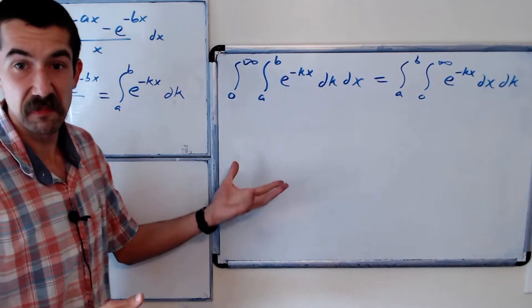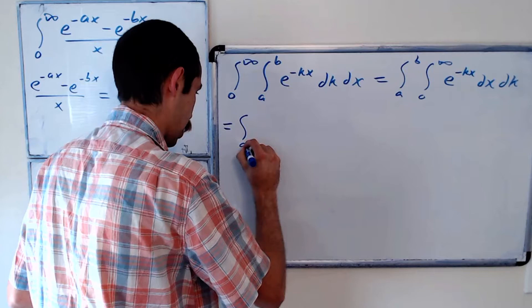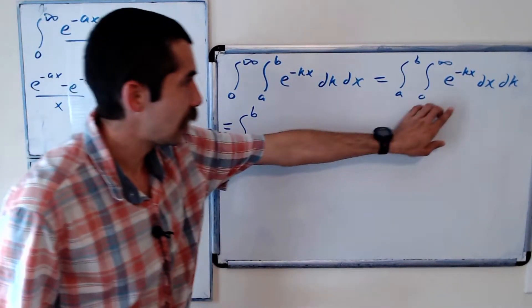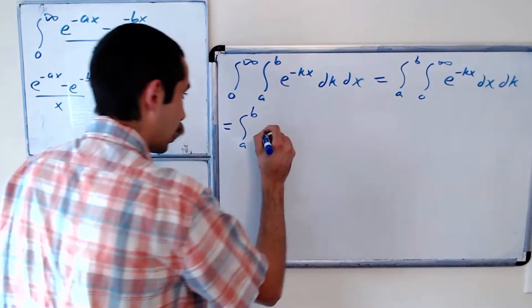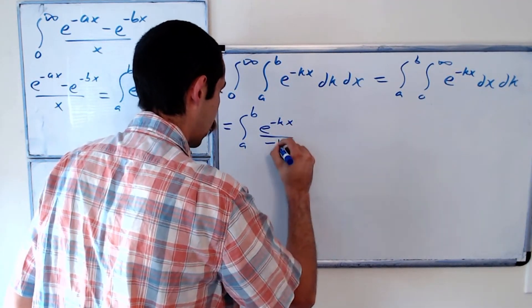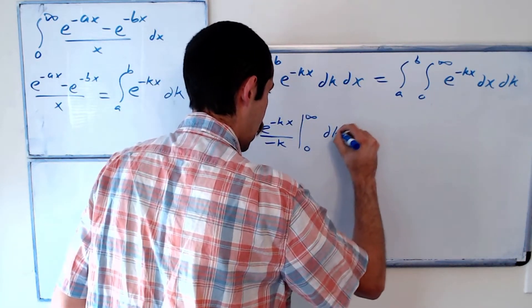And this is a lot easier to work with, right? So what is this equal to? The outside integral stays the same. Integral from a to b, this inside integral is e to the negative kx over negative k, evaluated at 0 to infinity, dk.